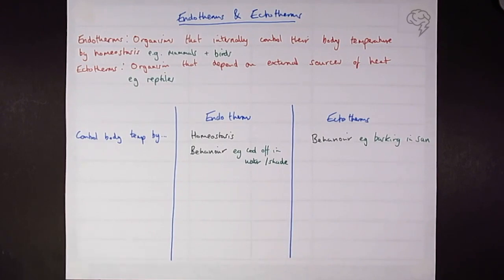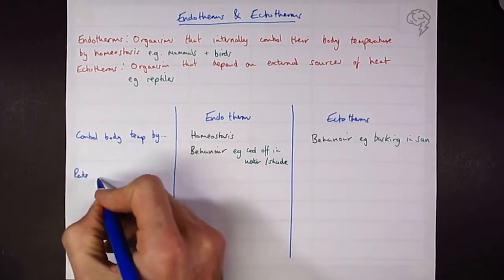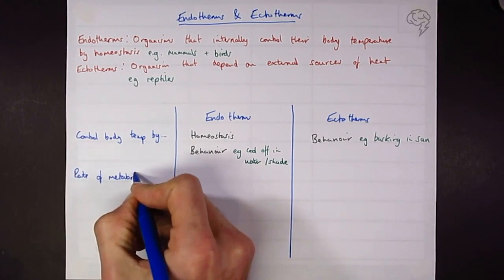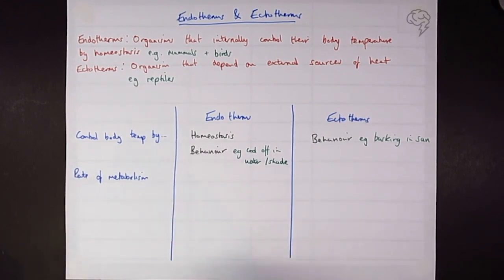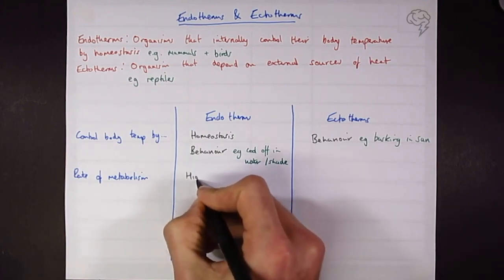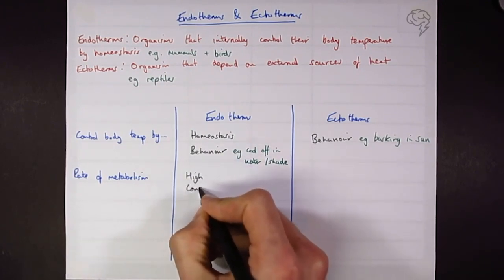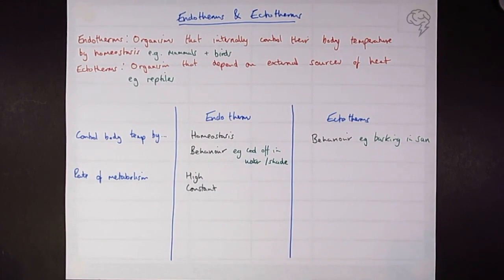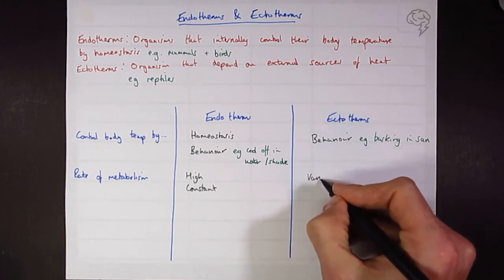Next up we can talk about their rate of metabolism. So endotherms, warm-blooded things, are going to have a high and constant rate of metabolism, whereas ectotherms are going to have a variable rate of metabolism, and that's going to be dependent upon the exterior temperature, on the environment.